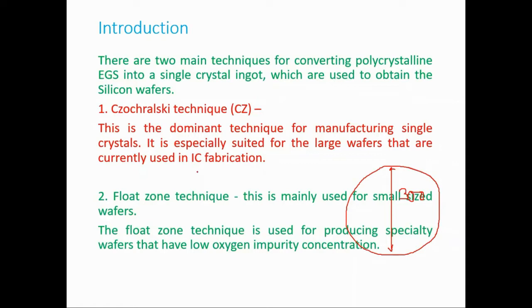The float zone technique is used when we need smaller crystals. It is used to produce specialty wafers that have low oxygen concentration, which is a requirement in some cases. However, the process most commonly used commercially is the CZ process. We will discuss both processes one by one in detail.